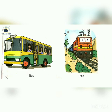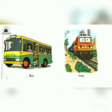Now children, when we travel to another town or city, how do you go? Ek town se doosre town ya city se doosri city jaana ho, toh aap kaise jaoge? You can go by bus or by train. But if you want to go faster, you will go by train. If you have to reach another city quickly, then you will go by train.